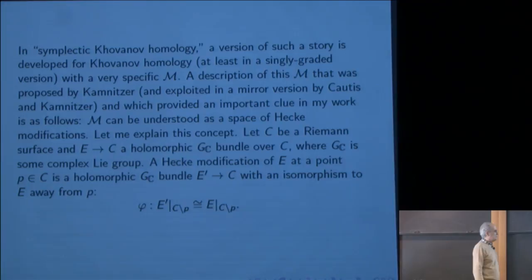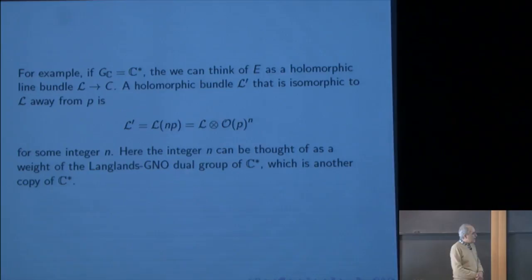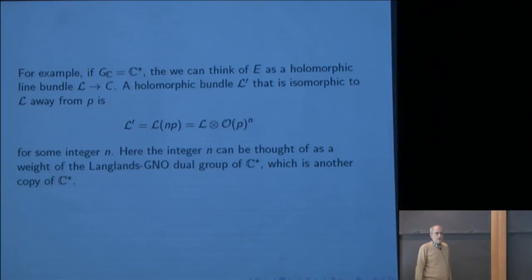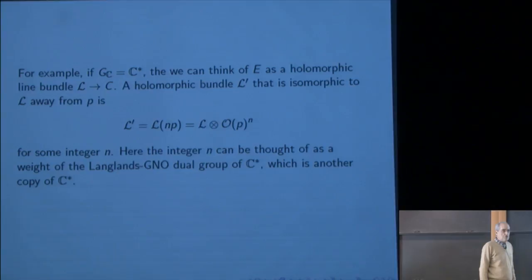For example, suppose the gauge group was U(1) so that its complexification is C*. Then you can think of E as a holomorphic line bundle. Another holomorphic line bundle L prime isomorphic to L away from P would be L twisted by allowing a pole of degree n or requiring a zero of degree n at P. So L prime is completely determined by an integer n, with L tensored with O(P) to the n. The integer n can be thought of as a weight of the Langlands-GNO dual group of C*, which in this case is another copy of C*.